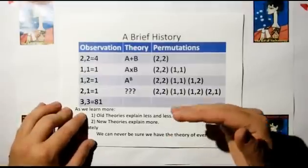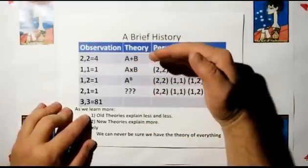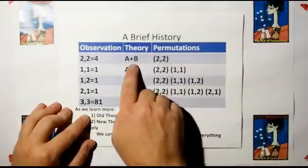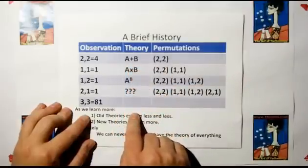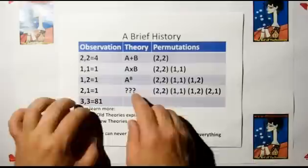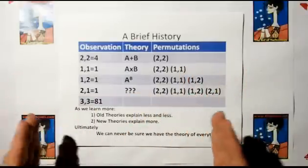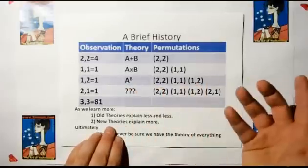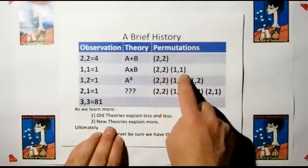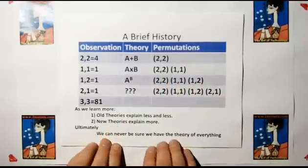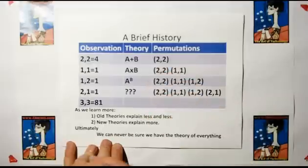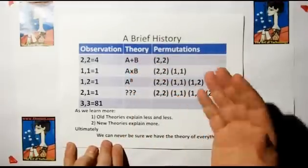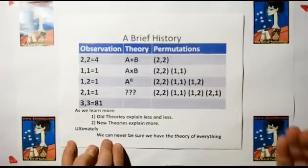So what we learn through this cycle is that as new observations are made and as the species learns more, the old models explain less and less. The amount of newer models that could fit the observations gets fewer and fewer. But the newer models that they come up with explain more — like A to the B explains three of the observations, where A times B only explains two. But no matter how many observations we take, we can never be sure what's in the box. All we can say is we're going to come up with models that mimic the behavior. Models do nothing but mimic the behavior.